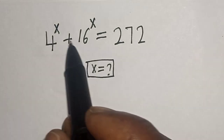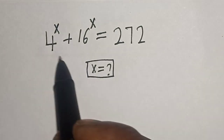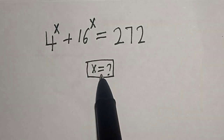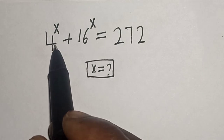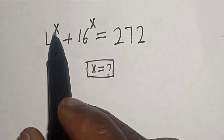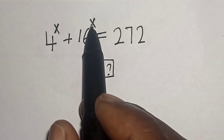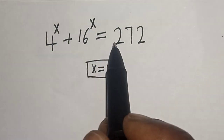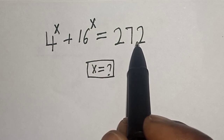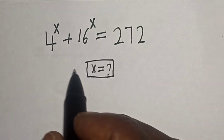Hello, welcome to Magist. In this class we want to find the value of s from this given equation: 4 raised to power x plus 16 raised to power s is equal to 272.